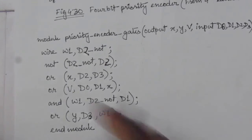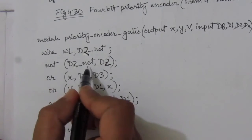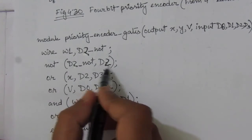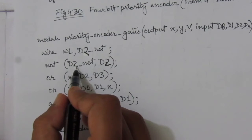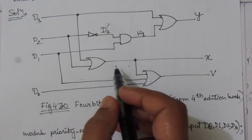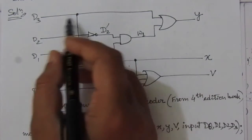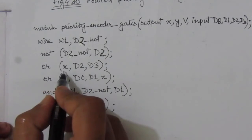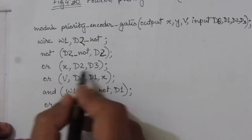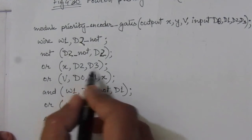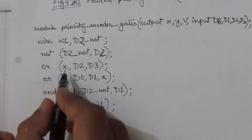d2_not is the complement of d2, so we write: not d2_not, d2 — meaning the NOT operation is applied on d2 and the result is stored in d2_not. For x, which is the OR operation between d3 and d2, we write: or x, d2, d3 — the OR operation result is stored in x.